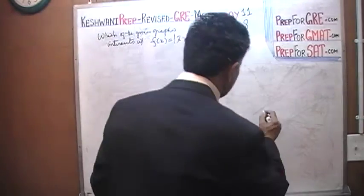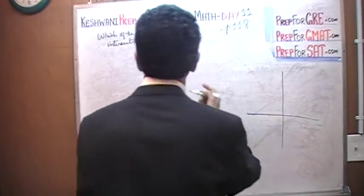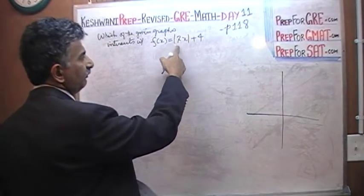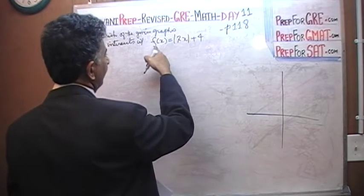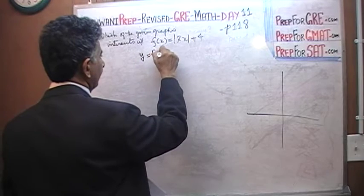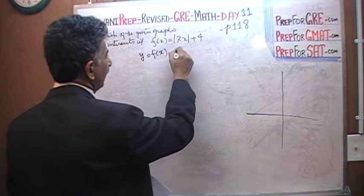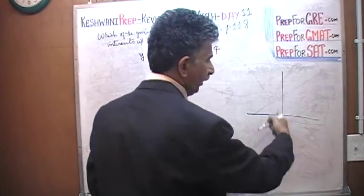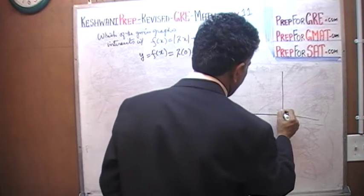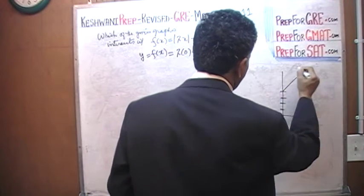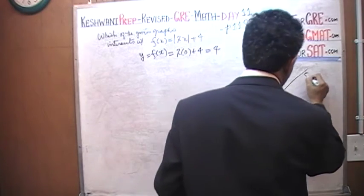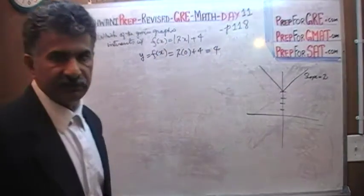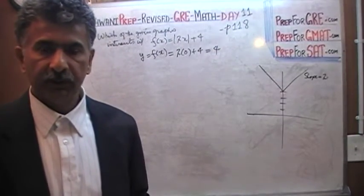Here is the graph given to us: f(x) = |2x + 4|. When x is 0, 2 times 0 is 0, so y is going to be 4. The y-value is 4 when x is 0 — that's 1, 2, 3, 4 up the y-axis. The graph has a V-shape with a slope of 2 on the right side, which is what we covered yesterday.